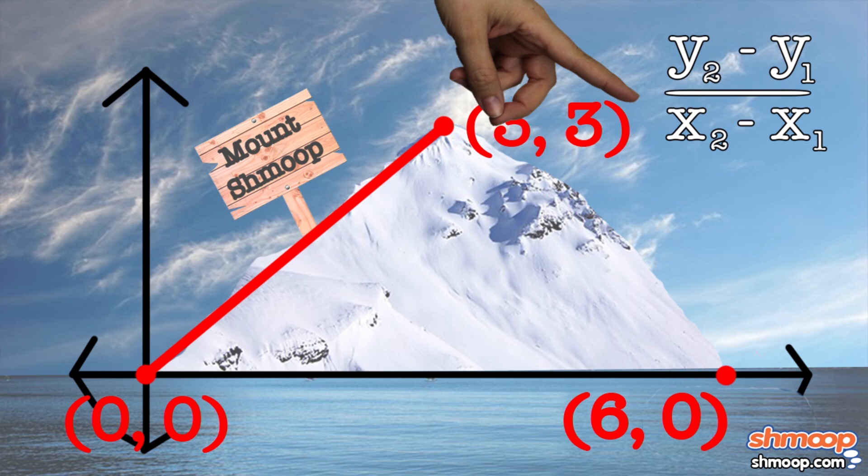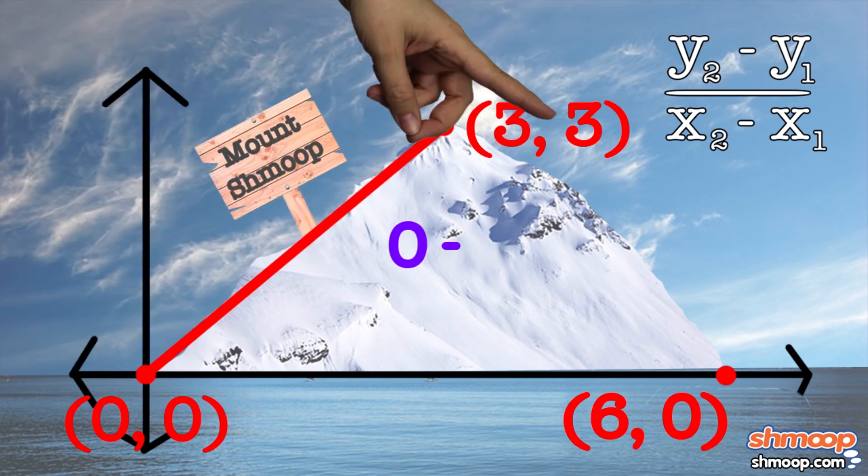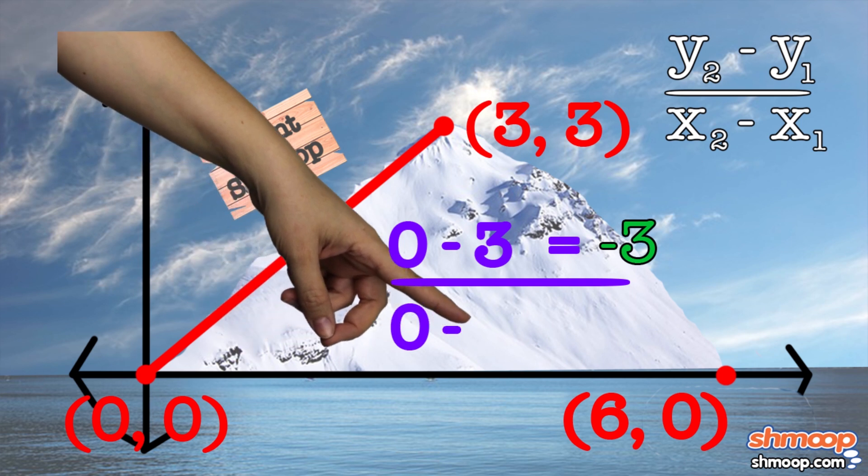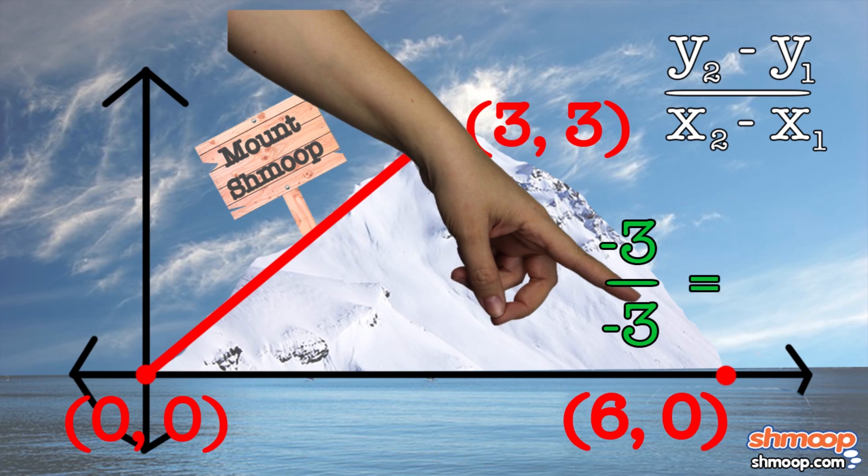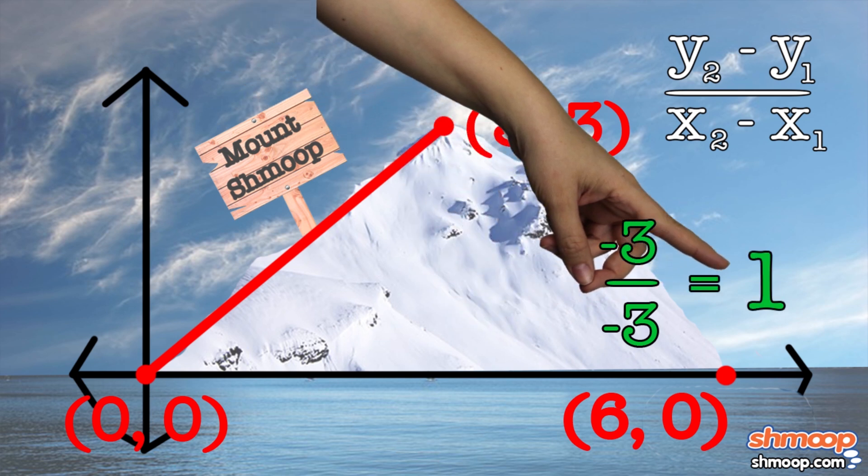For the numerator y coordinate, we'd have 0 minus 3 to get negative 3, and then we'd do the same for the x coordinate here and get negative 3. Well, the fraction would be just negative 3 over negative 3, which in California is, yet again, the loneliest number. So the slope is 1.